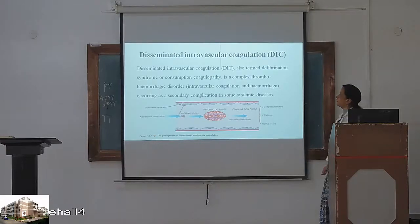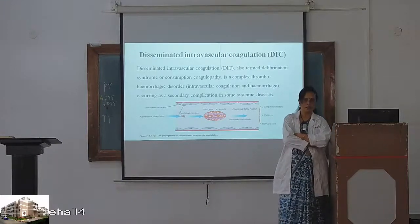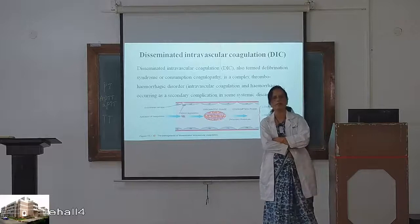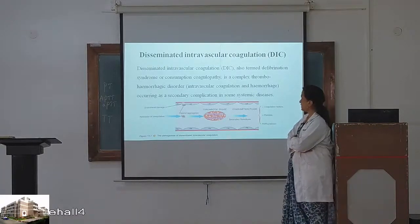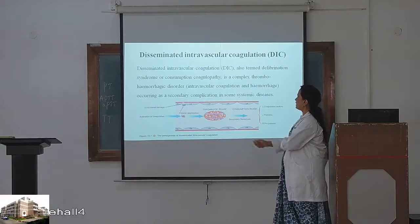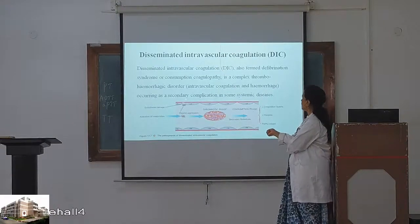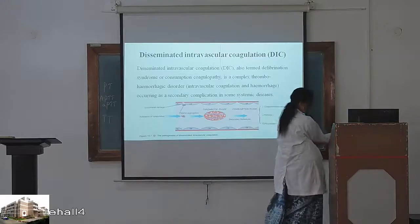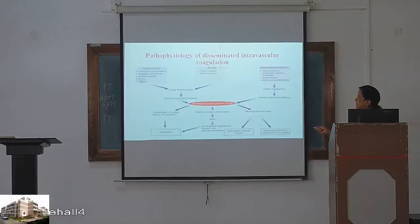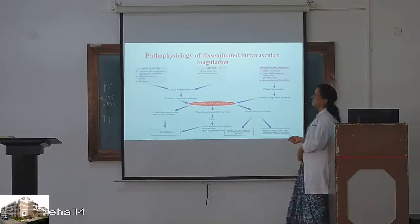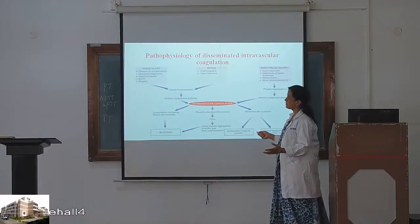Disseminated intravascular coagulation: one example is postpartum hemorrhage — a very pathetic situation. Abruptio placentae, abortion — all these can lead to DIC. It is also termed defibrination syndrome or consumption coagulopathy. It is a complex thrombohemorrhagic disorder occurring as a secondary complication of systemic diseases. Even amniotic fluid embolism can cause this.